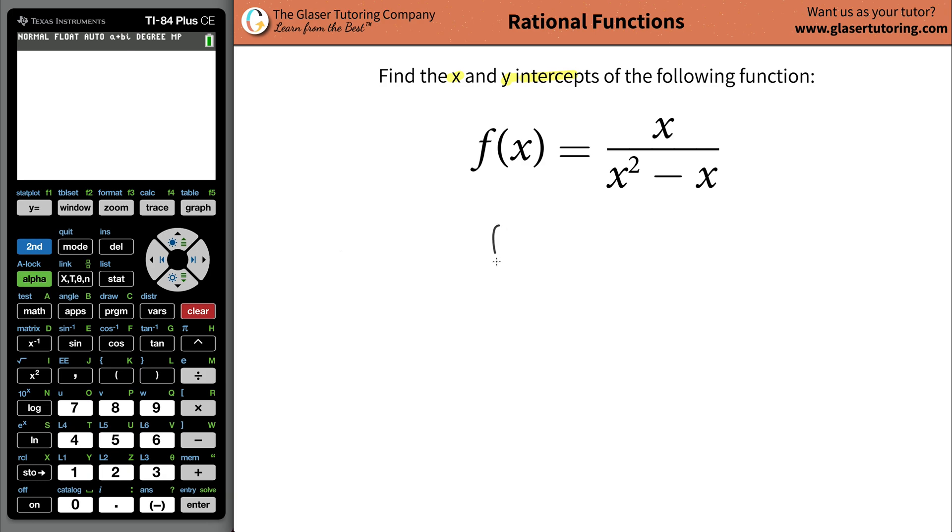So what I realize is that I can factor the denominator. There is a common x term and I can pull one of those x's out and then what's going to be left is x minus 1. If you were to think about distributing this x to each of those two terms you would have gotten an x squared minus x which would have been the original function there.